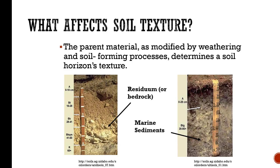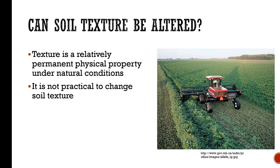The parent material, weathered plant material, and soil-forming processes determine a horizon's texture. Texture is a relatively permanent physical property under natural conditions — it's not practical to change soil texture. As I mentioned on the first day, if you add sand to clay to try to help with porosity, you're actually going to clog up those pores and it's going to become concrete. Soccer fields in many cases will be adding sand to the soil to increase the depth of the grass roots, but that needs to be sandy soil to begin with — otherwise they're going to have some big problems.